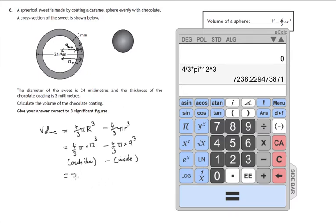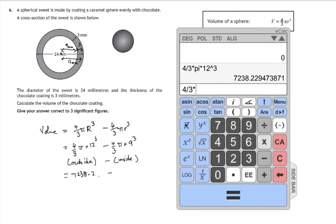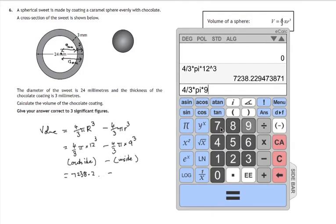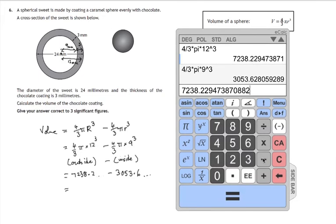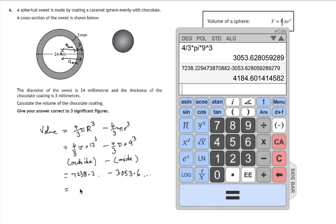And from that we have to subtract 4 thirds times pi times 9 raised to the power of 3. So that gives us 3053.6 and so on. So the whole volume minus the space in the middle. Subtract these two then we get 4184.6 and so it goes on.